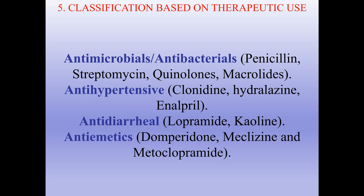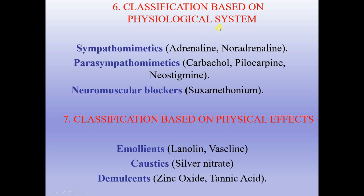Classification based on therapeutic use: antimicrobials and antibacterials — penicillin, streptomycin, quinolones, macrolides; antihypertensives — clonidine, hydralazine, enalapril; antidiarrheals — loperamide; antiemetics — domperidone, meclizine, and metoclopramide. Classification based on physiological system includes sympathomimetics, parasympathomimetics, and neuromuscular blockers. Classification based on physical effects includes emollients, caustics, and demulcents.